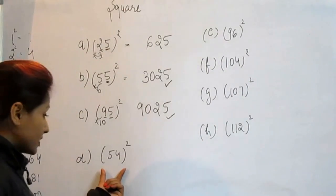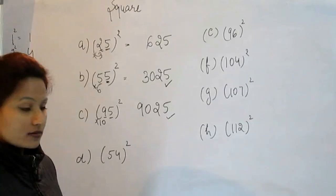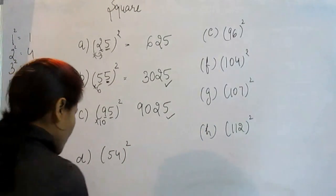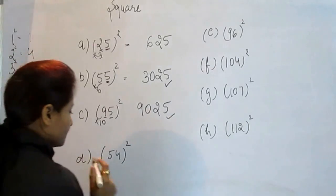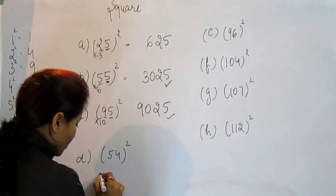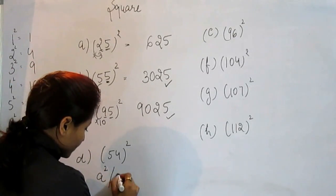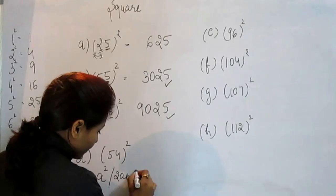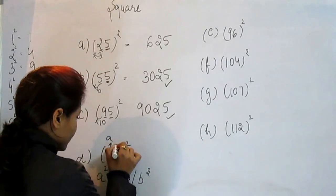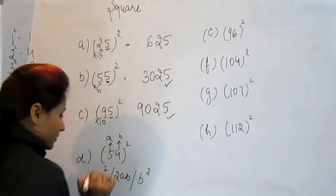But now this number doesn't contain 5 at the end. So what do we do? For this type of number we have a small formula. That is a square, 2ab, and b square. This 5 is a, this 4 is b.